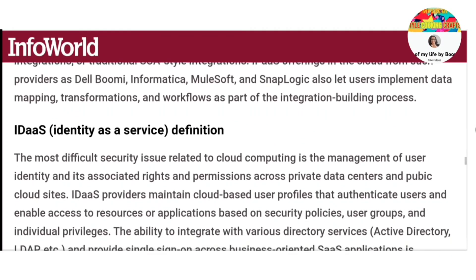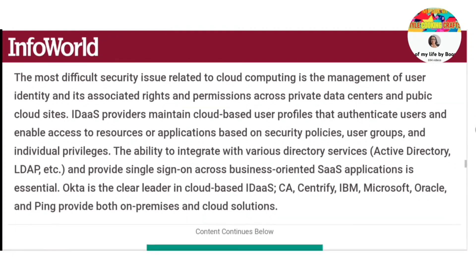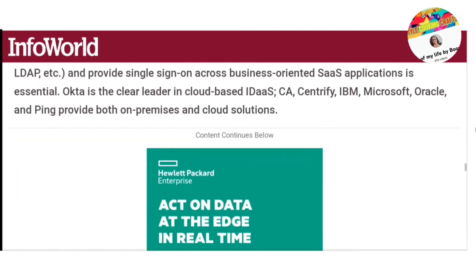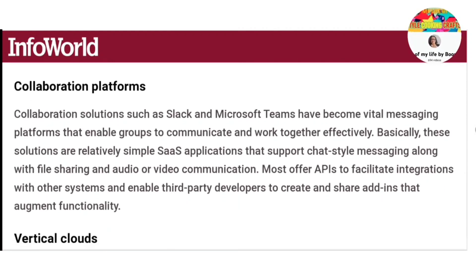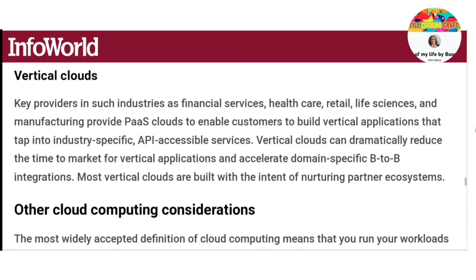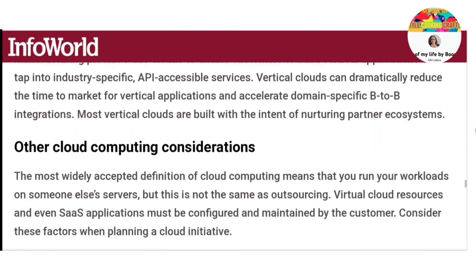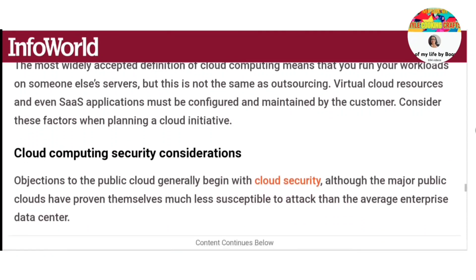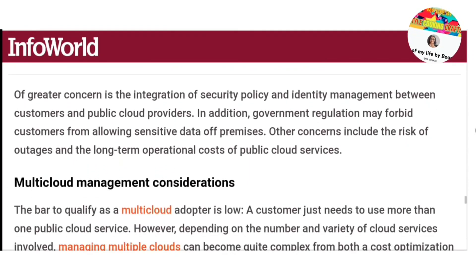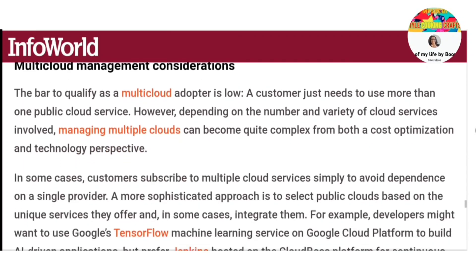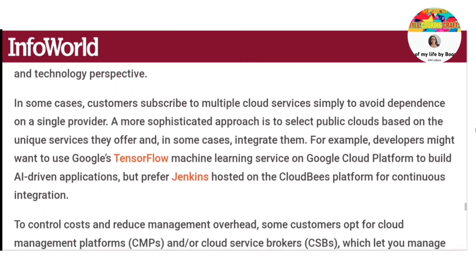Now let us understand in detail how cloud computing works. Cloud computing works by enabling client devices to access data and cloud applications over the internet from remote physical servers, databases and computers. An internet network connection links the front-end — which includes the accessing client device, browser, network and cloud software applications — with the back-end, which consists of the databases, servers and computers. The back-end functions as a repository storing data that is accessed by the front-end.